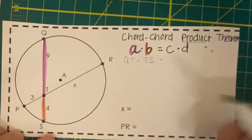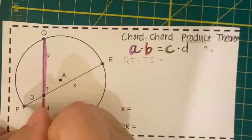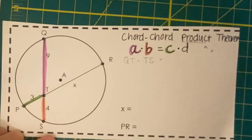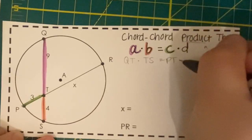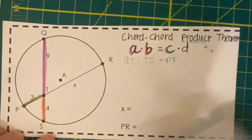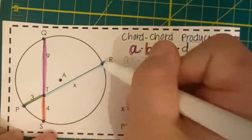Similarly, for C and D, C can be segment PT, and D is going to be segment TR.